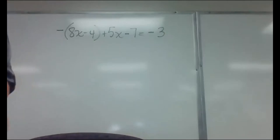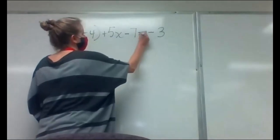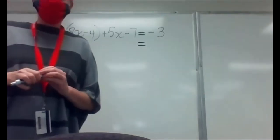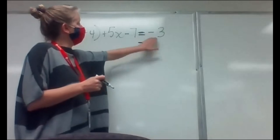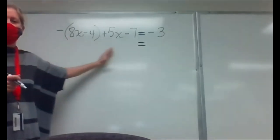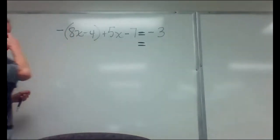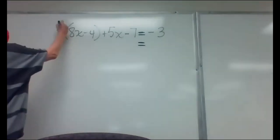So what we're going to do first — especially when we have several things going on on one side — make sure we keep that equal sign in the same spot. Moving it around is going to mess you up. I'm going to bring down that equal sign and try to clean up either side. Nothing's really going on on this right side, so that negative three is just going to come down. But I do have things I can do to clean up this left side.